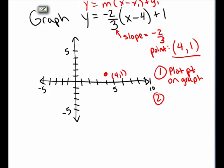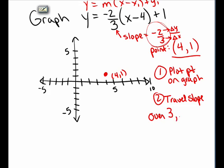Then I travel the slope to the next point on the graph. The slope of this line is negative 2 thirds, which is change in y divided by change in x. So the change in x is 3 and the change in y is negative 2. Every time we go over on the x values by 3, we will go down on the y values by 2. Starting at 4 comma 1, I go over 1, 2, 3 and down 1, 2, and I plot another point.